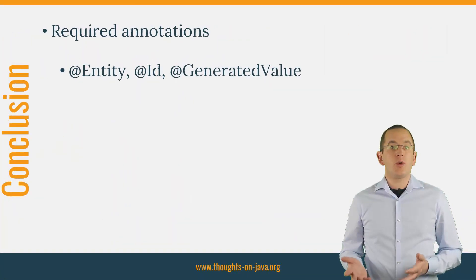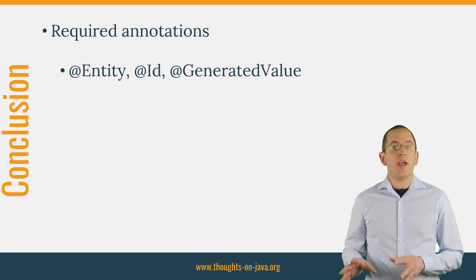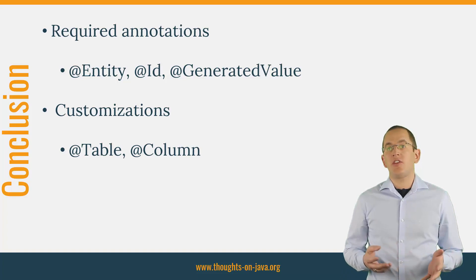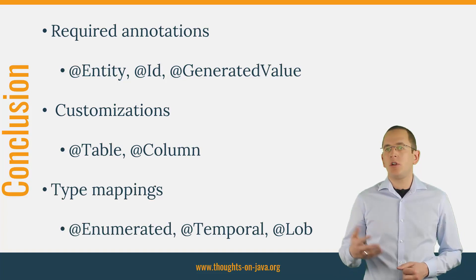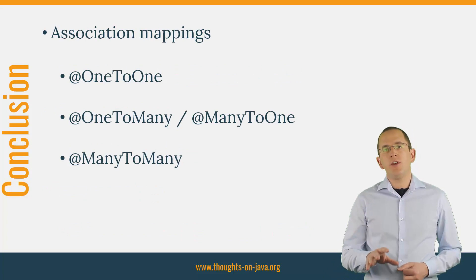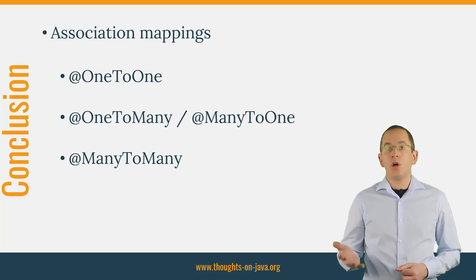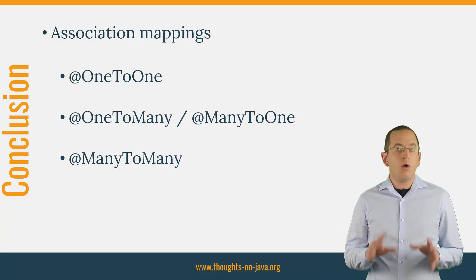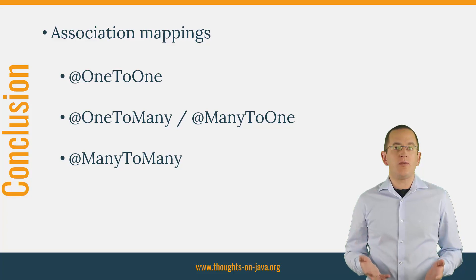As you have seen, you only need a relatively small number of annotations to define your domain model. In most cases, you only need to annotate your entity class with @Entity and your primary key attribute with @Id and @GeneratedValue. If the names of your entity class or one of its attributes don't match the table or column names, you can adjust the mapping using @Table or @Column. You can also change the type mappings using @Enumerated, @Temporal, or @Lob. One of the key features of any object-relational mapper is the handling of associations. With JPA and Hibernate, you can map one-to-one, one-to-many, many-to-one, and many-to-many associations in a uni- or bidirectional way, with additional annotations to define fetching and cascading behavior.